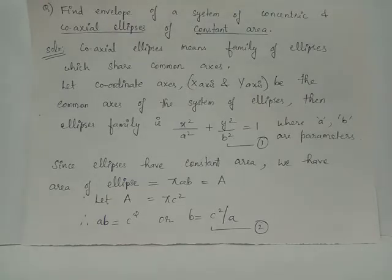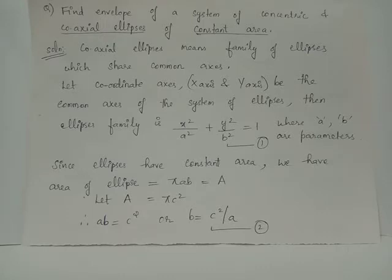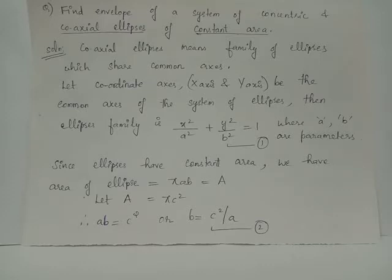Find the envelope of a system of concentric and coaxial ellipses of constant area. We are considering a family of concentric and coaxial ellipses, which means these ellipses share common axes — the x-axis and y-axis act as major and minor axes for all ellipses. Let x²/a² + y²/b² = 1, where a and b are parameters, represent the family of ellipses sharing a common center and common axes.